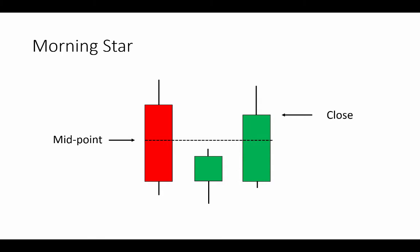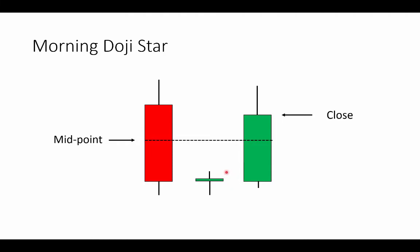It is the same for the more restrictive version, the Morning Doji Star. The only difference here is that the second candle is a doji — a bar with virtually no body at all. Again we have a large body down close, the doji, and a large body up close with a close above the midpoint of the first bar.